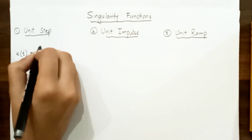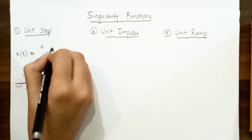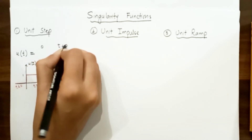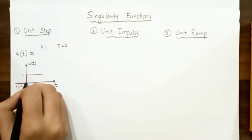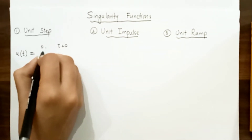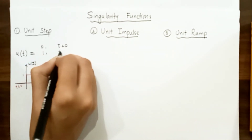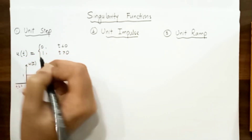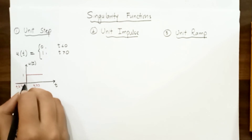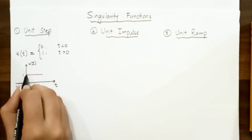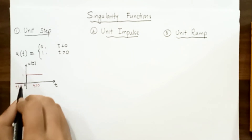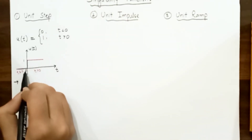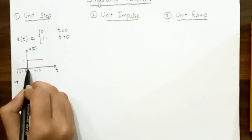We can write the unit step function mathematically as: u(t) equals 0 when t is less than 0, and u(t) equals 1 when t is greater than 0. At t equals 0, the function is undefined because it changes abruptly from 0 to 1.